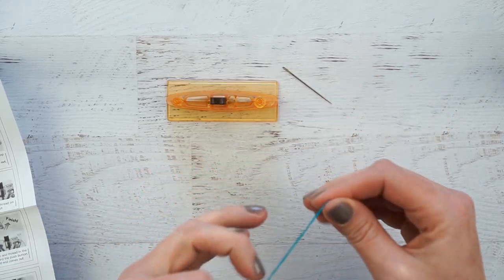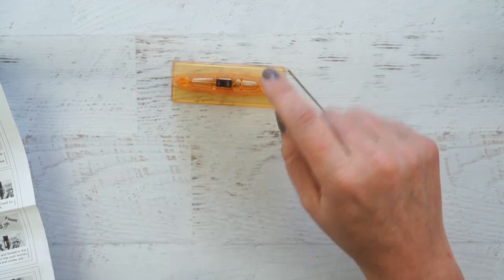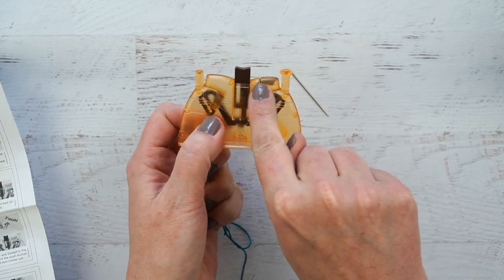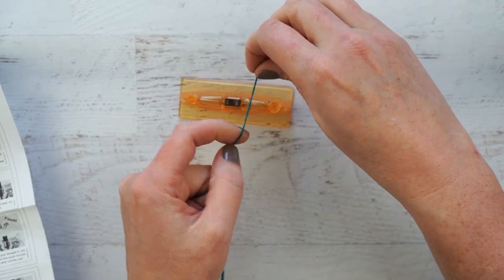Step one is to set the thread in the needle, in the thread feeder. So these are the thread cutters, the two slits nearest the button here. Oh wait, no, there's only one thread cutter. Let's try that out.